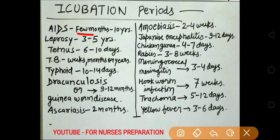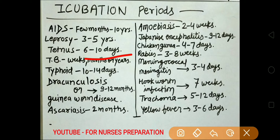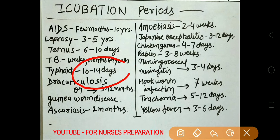AIDS few months to 10 years. Leprosy 3 to 5 years. Tetanus 6 to 10 days. TB weeks, months or years. Typhoid disease 10 to 14 days. Dracunculosis or Guinea worm disease 9 to 12 months.